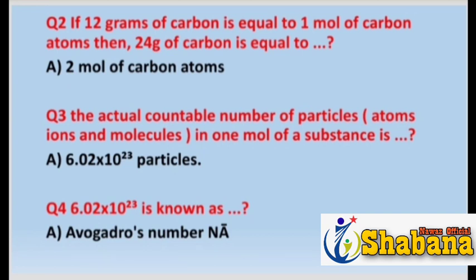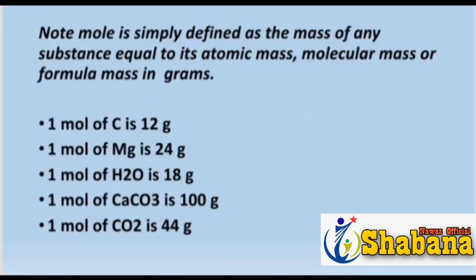Question number three: the actual countable number of particles — atoms, ions and molecules — in one mole of a substance is 6.02 × 10²³ particles. Question number four: 6.02 × 10²³ is known as Avogadro's number.